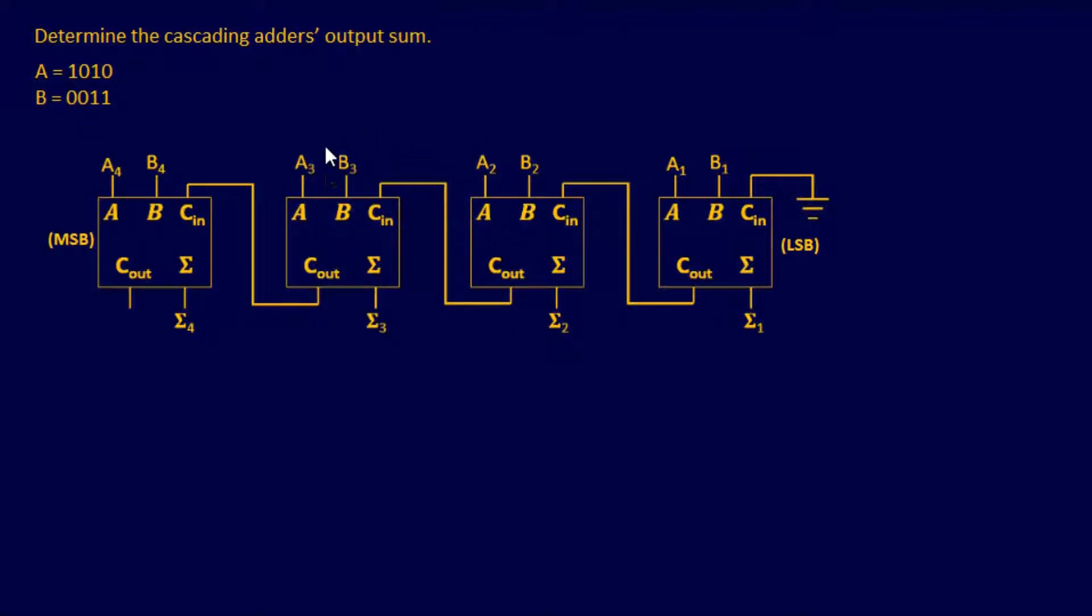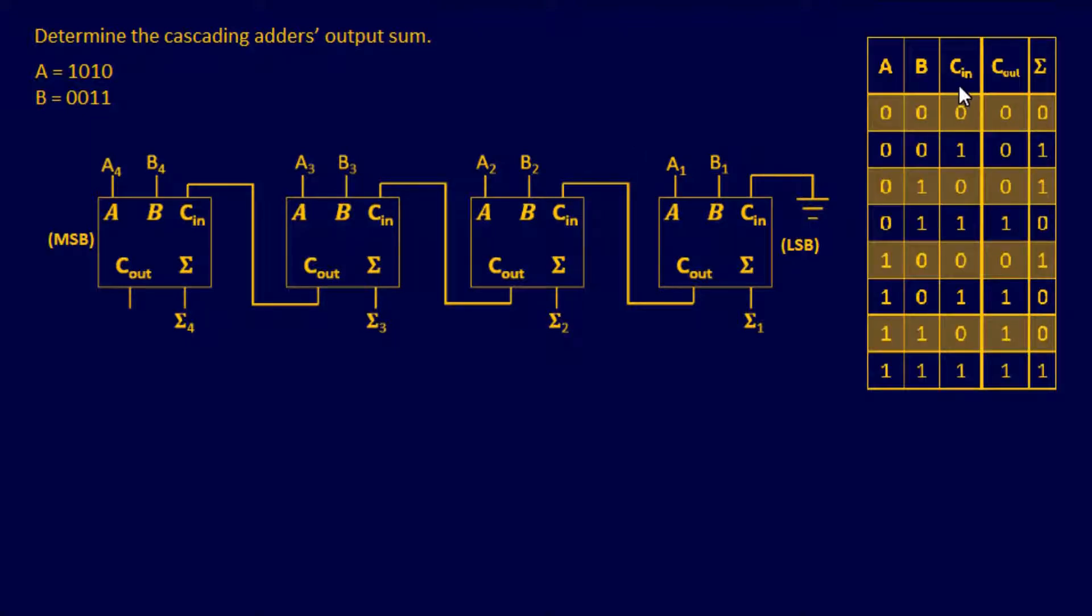Let's go ahead and obtain our truth table from our textbook. And then let's go ahead and input our A and B binary numbers. So we have our most significant bit and then we have our least significant bit. Same thing.